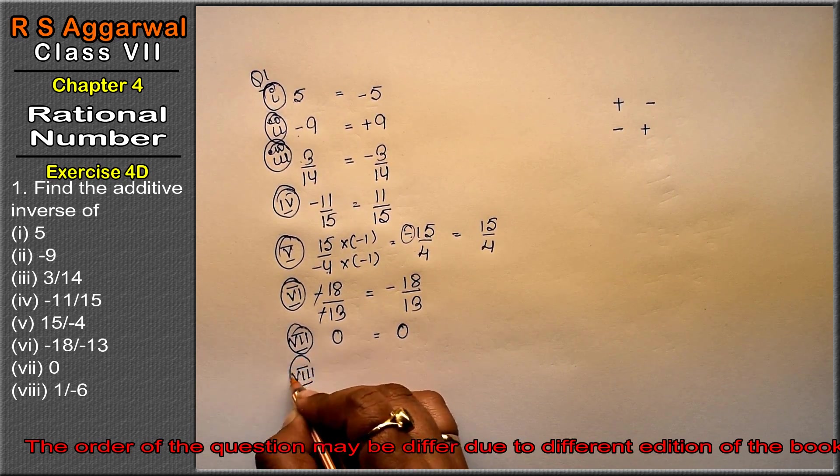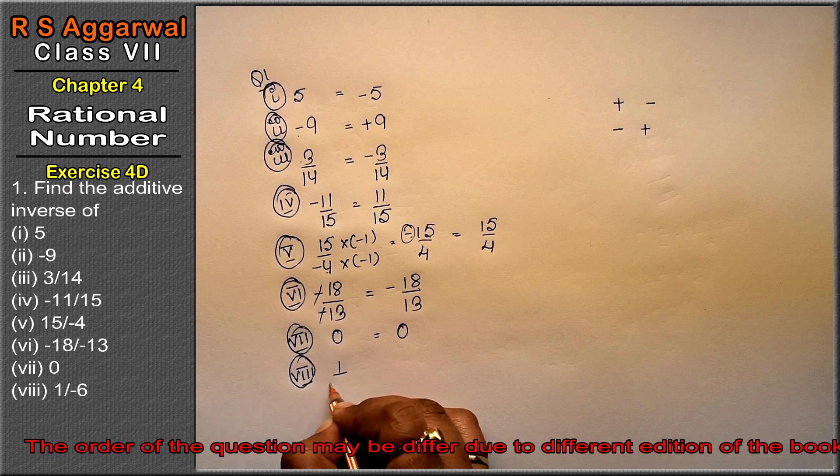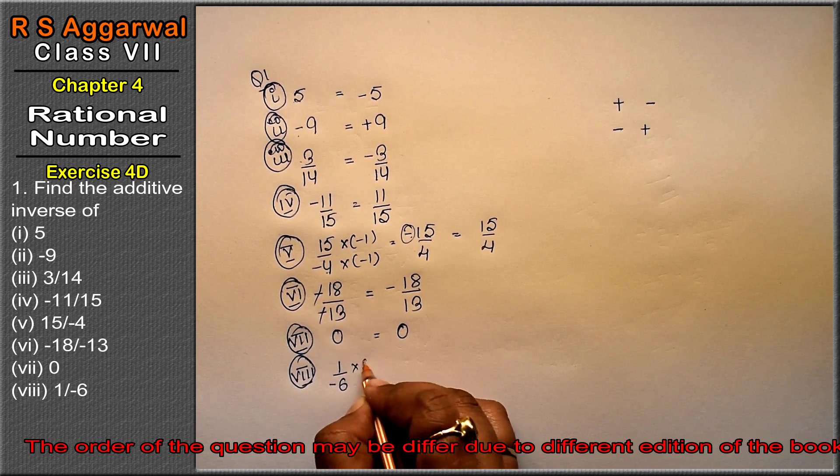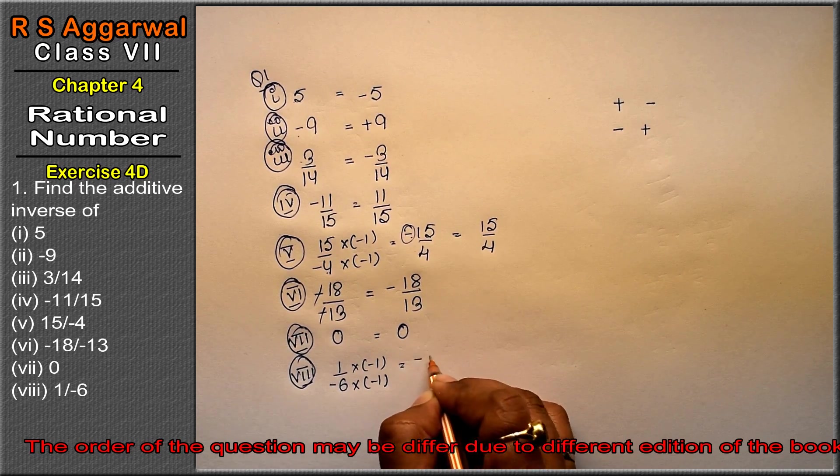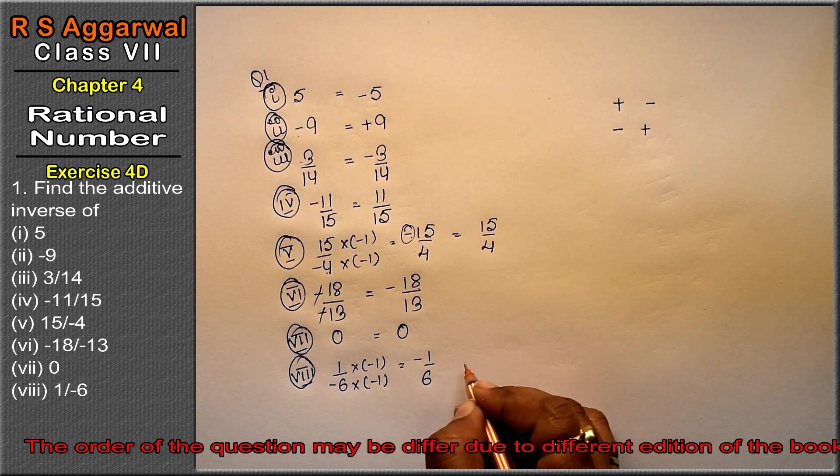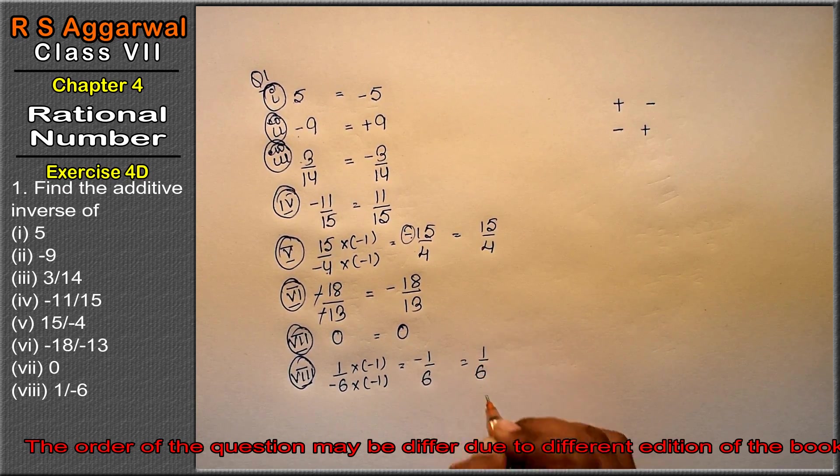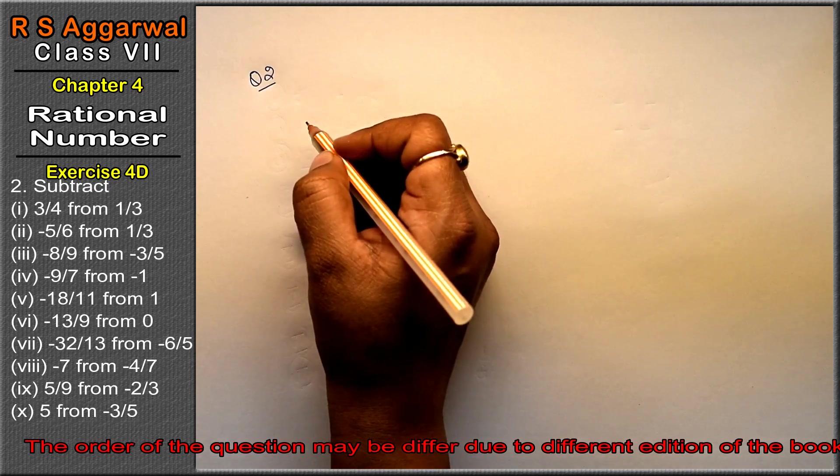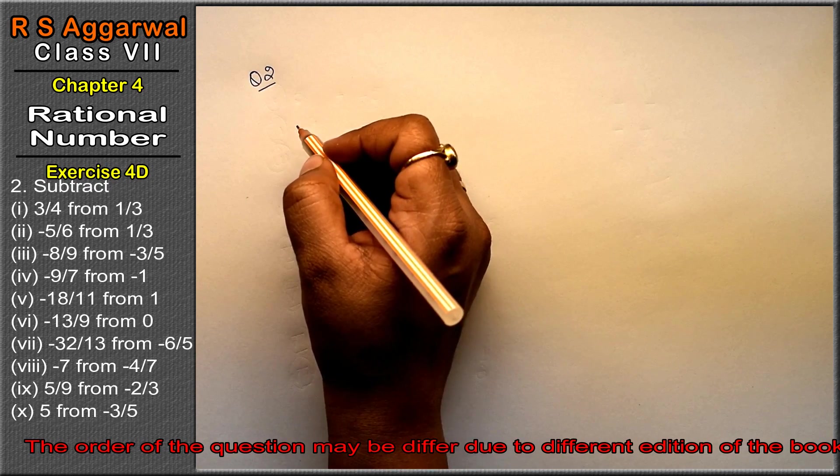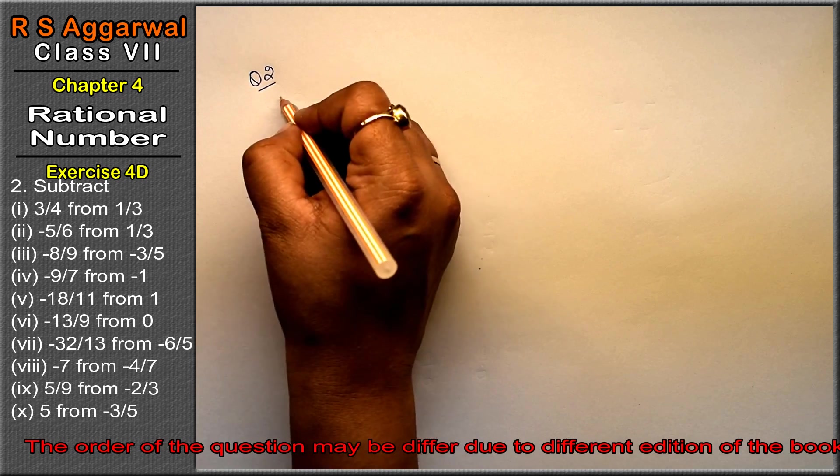Eighth part: 1 upon minus 6. As I said, multiply minus 1 from below, above and below, and minus 1 upon 6 is the answer. Let's do question number 2 of Exercise 4D, that is rational number. Question number 2 is subtract.